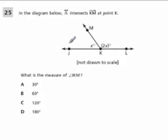We want to know what is the measure of angle JKM. So just follow those points. Here's J. Here's K. And here's M. And it forms angle X.